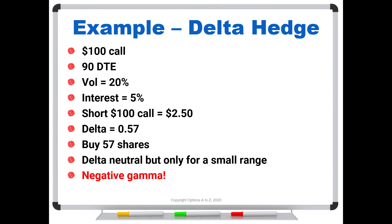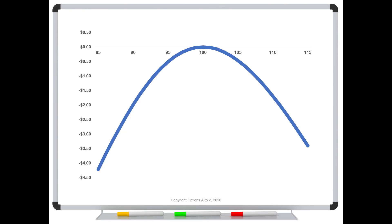So let's say that we did this. We shorted this option for 250 and then we bought 57 shares of stock. This would be our profit and loss diagram. So you can see that this blue curve is fairly flat, but only for a very small range. As you start moving up away from this strike of a hundred, or if you start moving below it significantly, you start entering into risk and those risks or losses only get bigger as you move further away. And that's why we're getting this upside down U shape. This is a classic example of negative gamma.